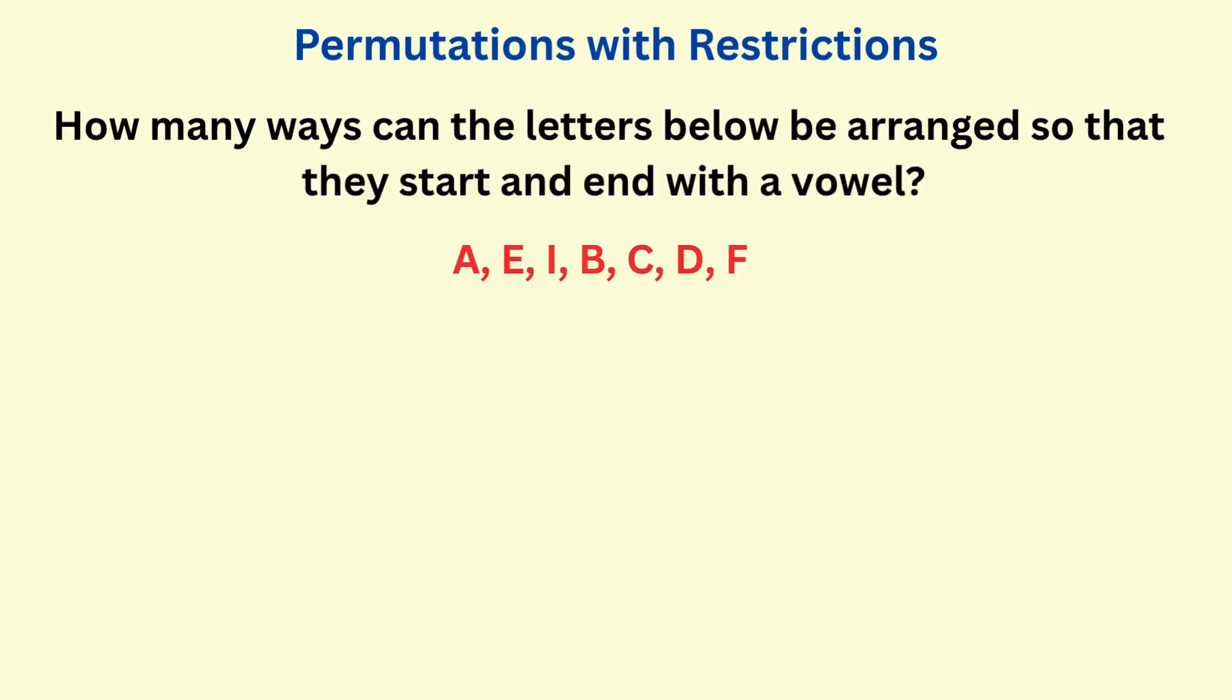We have seven distinct letters, and we're told the arrangement must start and end with a vowel. Our task, to find how many such arrangements are possible. Out of the letters given, A, E, and I are vowels. The rest are consonants.